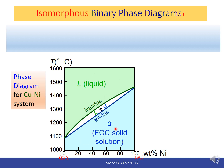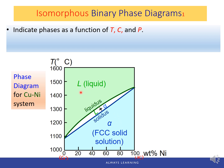This phase diagram maps the phases as a function of temperature and composition. Pressure is typically held constant at one atmosphere, so it is not a variable. We only change temperature and composition to determine what phases are present. This is a binary system because it has two components — copper and nickel — and the independent variables are temperature and composition.